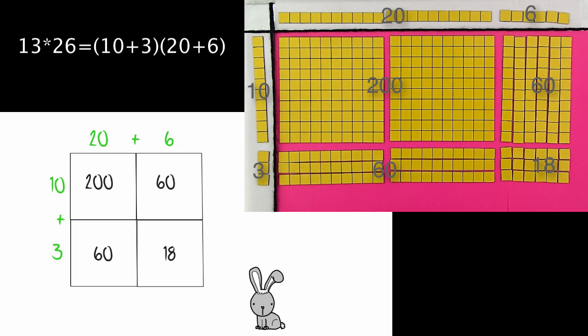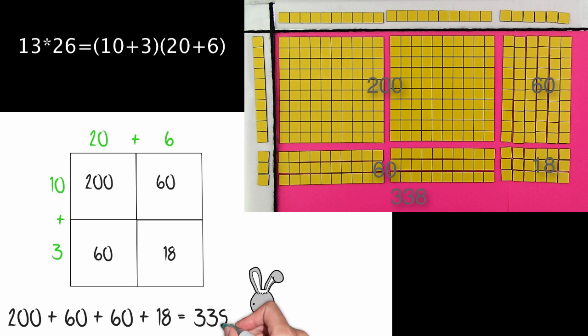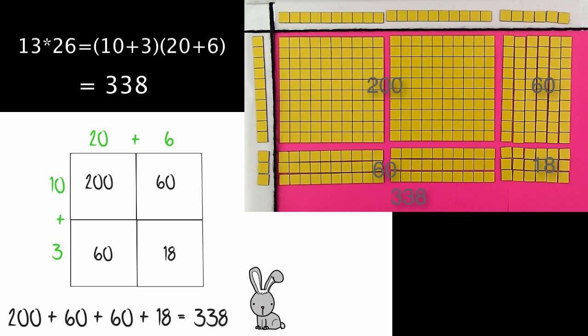So, to find the final answer, I need to add up all the pieces that are in the multiplication array. So that would be 200 plus 60 plus 60 plus 18, giving us a total of 338. Therefore, 13 times 26 is 338.